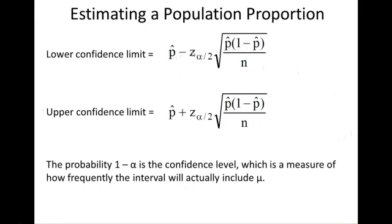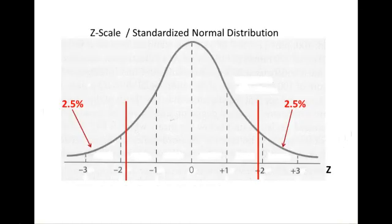So let's get back to this z value at alpha divided by 2. So alpha is your significance level divided by 2. 95% confidence would give you this value here would be 2.5%.